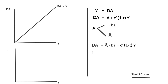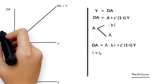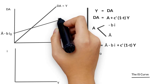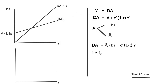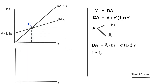In order to draw the IS Curve based on the income-expenditure model, we need to know the interest rate value. If the interest rate equals I sub zero, then the aggregate demand will equal (A minus B·I₀) plus the marginal propensity to consume times (1 minus T) times Y, obtaining the aggregate demand curve sub zero and equilibrium point E₀ for income level Y₀. On the interest rate–income graph, the first point of the IS Curve is the combination of I₀ and Y₀.